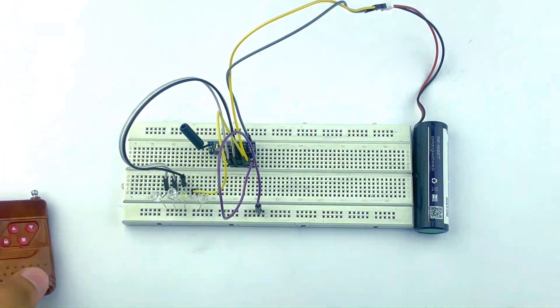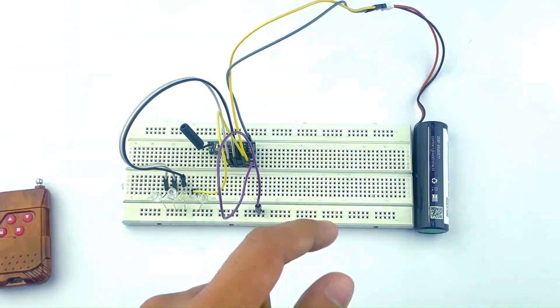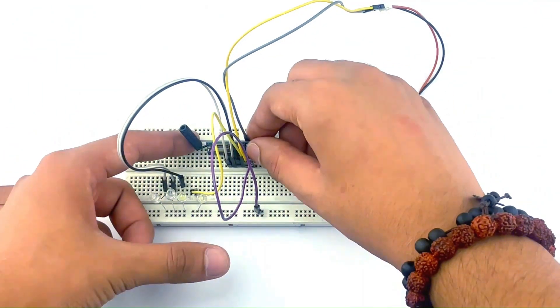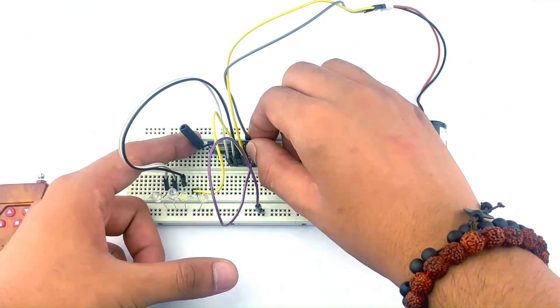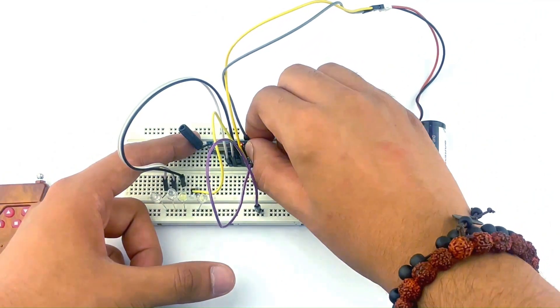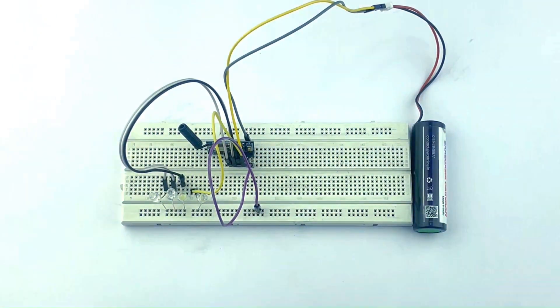I have reset the module by pressing this button eight times consecutively. This is called the learning button. I'll do it again for you: one, two, three, four, five, six, seven, and eight. It's reset. The LED is blinking now and as you can see it's still performing no functions.